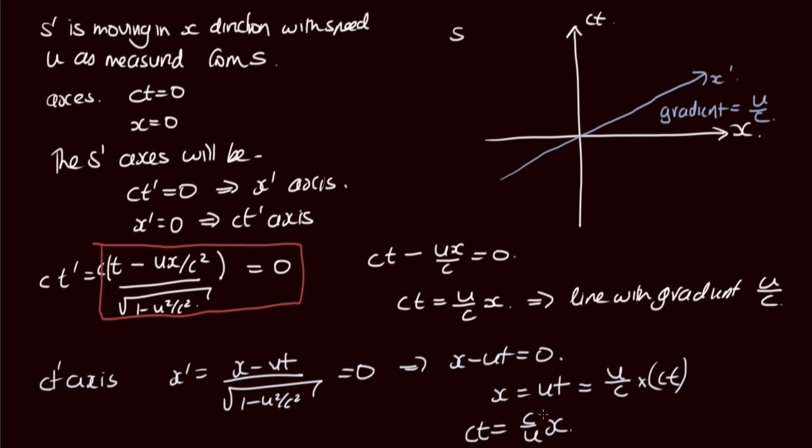So this is a line with a gradient c/u. So once again, we can draw this onto our diagram here. This and this angle are equal. This is the ct' axis, and the gradient is equal to c/u.